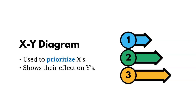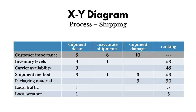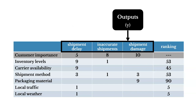So how do the inputs affect the outputs? Let's look at an example of an X-Y diagram using a shipment process — a process for shipping orders. On the top of the diagram, we're going to see outputs — undesirable outputs, things we want to avoid — like shipment delays, inaccurate shipments, or shipment damage.